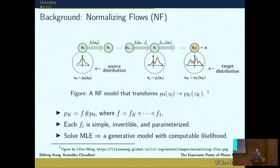Let me first introduce the background of normalizing flows. A normalizing flow is a kind of deep generative model. Here is a figure that illustrates these flows. Suppose we have a random variable z0 with density p0. It's called the source distribution or the input distribution.